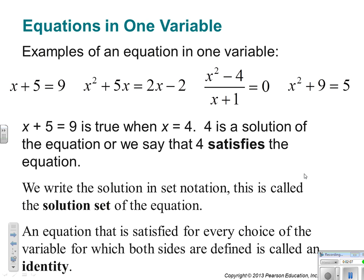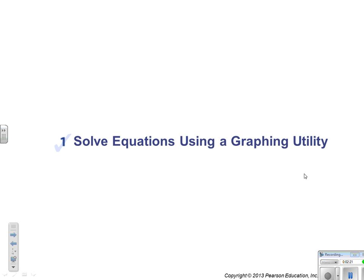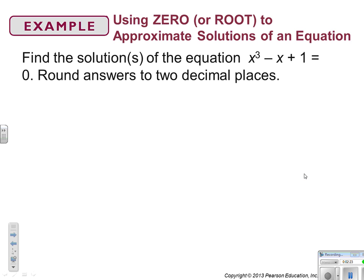So, let's read that again. An equation that is satisfied for every choice of the variable. So, whether it's 2, negative 2, 1,000, 1 million, it gives you a true statement, it's called an identity. All right. Now for the big money.